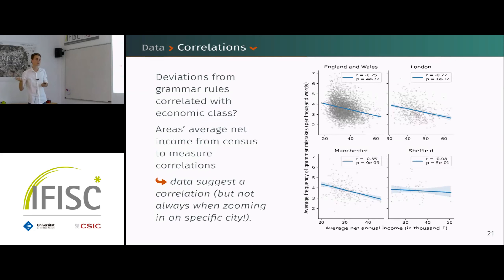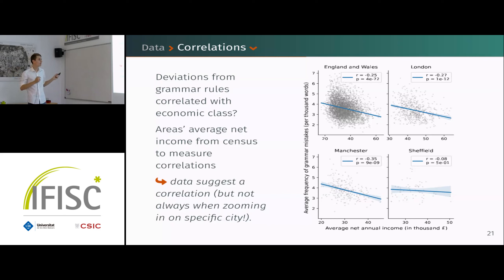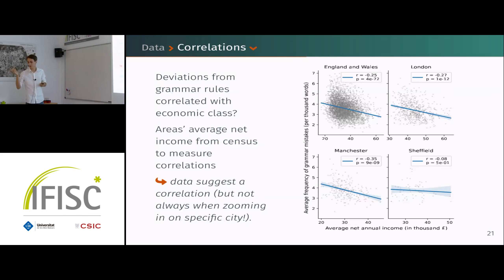We then want to relate deviation from standard language to some socioeconomic indicator. Since we identified the area of residence of our users, we assign them the average net income of these areas from the census. On the x-axis is income, on the y-axis is the average frequency of deviations — each point is a cell — and the data suggests a negative correlation: the richer the area, the more standard people speak.